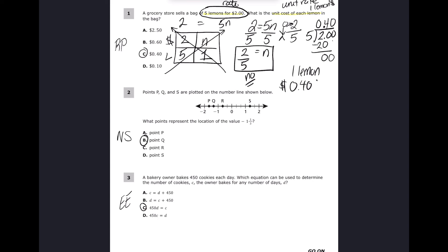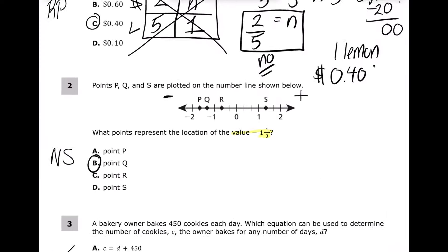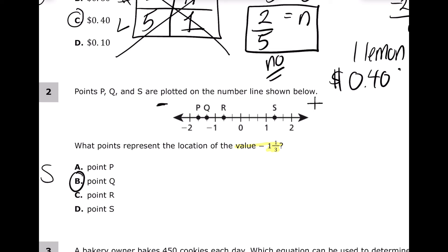For number two, we want to locate negative one and one-third on a number line. It has to be negative, so smaller numbers are on the left. Since it's negative, it must be to the left of zero — so answer S is immediately eliminated.